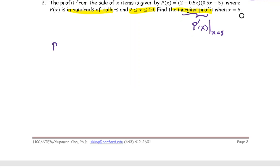From the given P(x) as the product of 2 minus 0.5x and 0.5x minus 5, it's very clear we see this as a product. So I'm going to name this the function f multiplied by function g. And on the side, make a list.